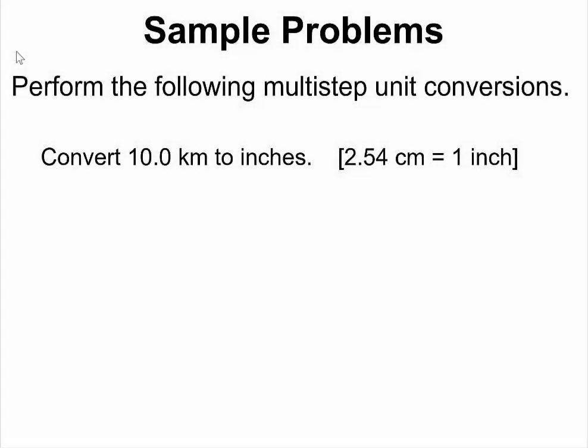Let us now do some unit conversions that will require multiple steps. Let us take a look at this question. We want to convert 10.0 km to inches, and this is the relationship provided to us: 2.54 cm is equal to 1 inch.